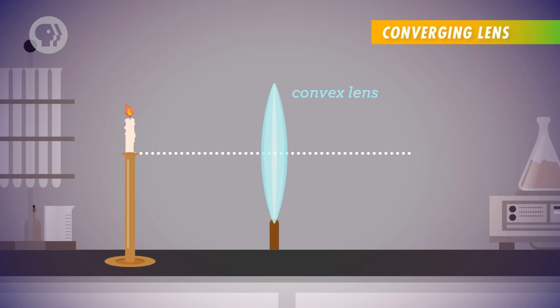Lenses have the same focal length on both sides, so we'll label the focal point on the side opposite of the object as F, and the point on the same side as the object as F prime. Now, we know that the ray traveling parallel to the axis will pass through the focal point on the other side.